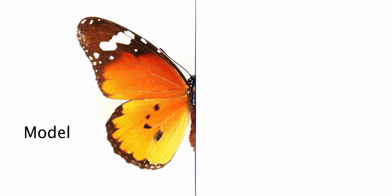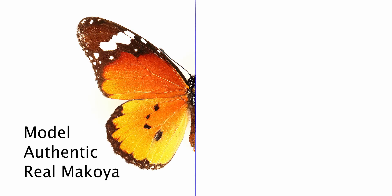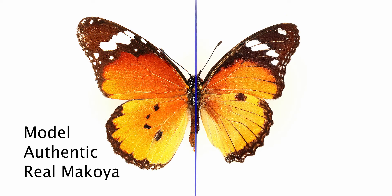In mimicry there are always two species involved. The first one is the model — the authentic, or the real makoya, like we'll say in South Africa. The second one is the mimic, the fake, or the imposter.